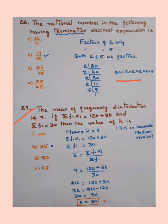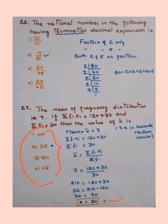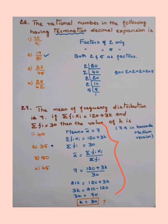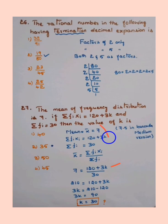The mean of a frequency distribution is 7. If sigma fi·xi equals 120 plus 3k and sigma fi equals 30, find the value of k. After solving, I found the answer didn't match the given options. Checking the Kannada medium version, the mean was given as 7.5, which gives k = 35. The English medium paper gives mean as 7. I'll solve for mean = 7 — the method is the same. For multiple choice, directly substitute into the formula without writing everything out to save time.